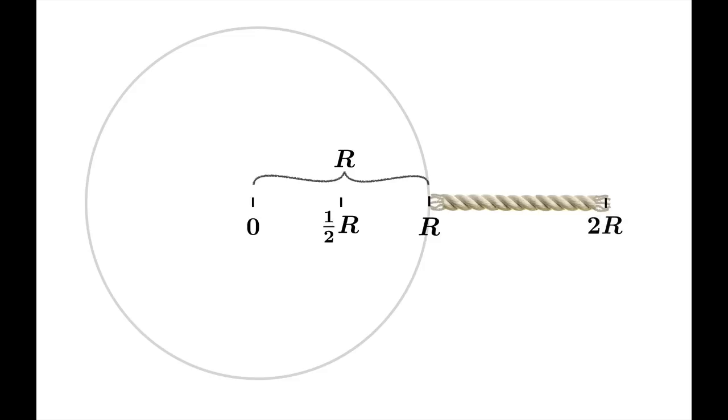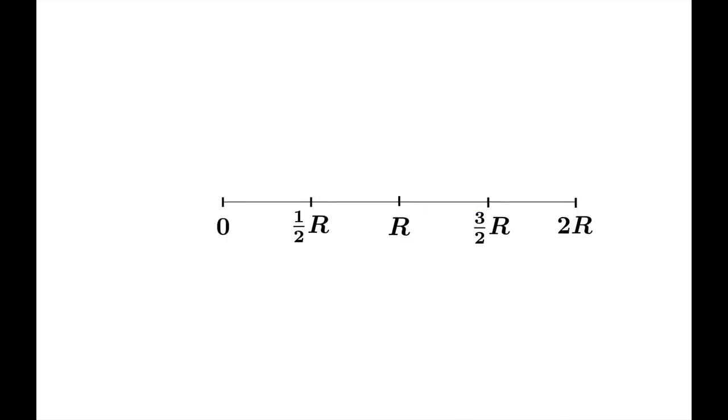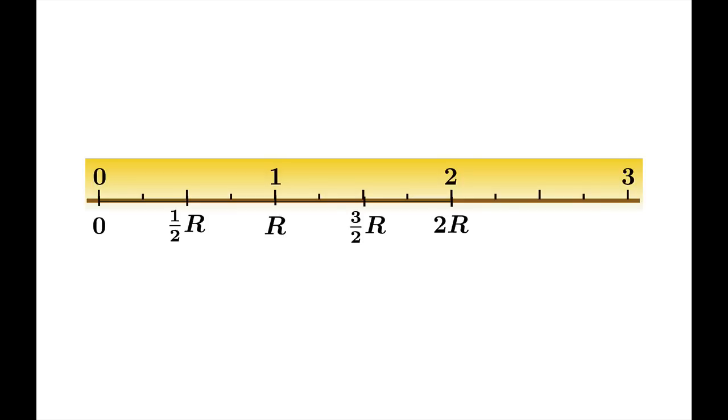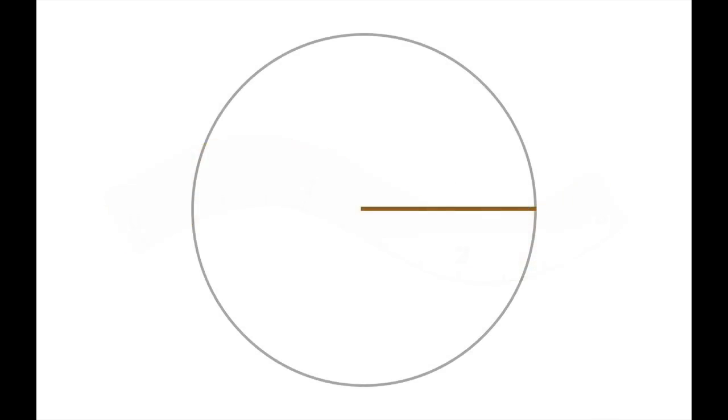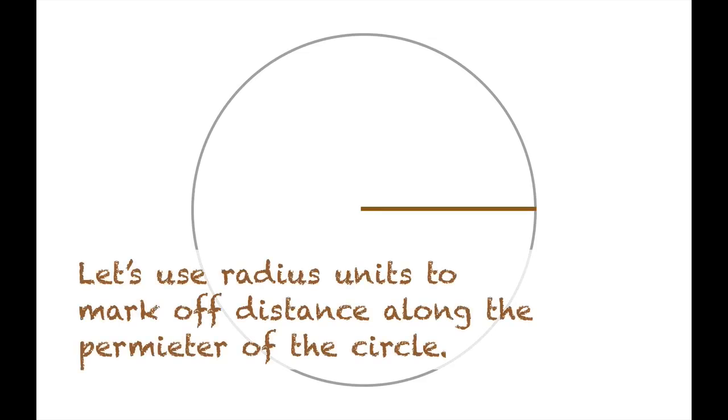You can keep working the rope around until eventually you could create a system that basically measures radius units. Because the rope bends, you've got a nice flexible ruler that you could wrap around the circle that you drew. So let's go back to that circle you drew in the sand and we're going to use radius units to mark off distance along the perimeter of the circle.